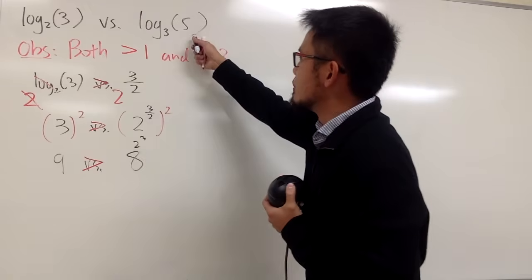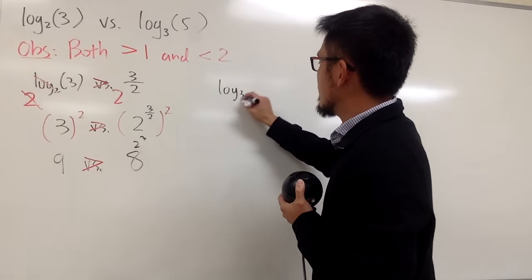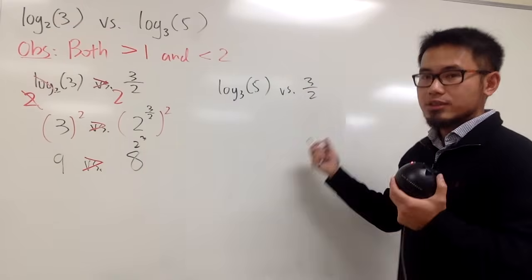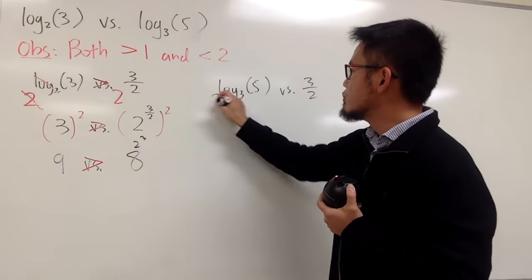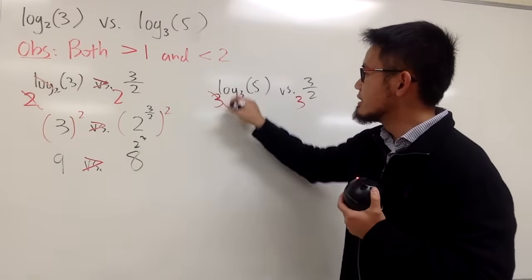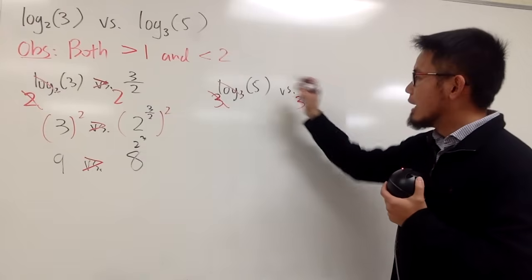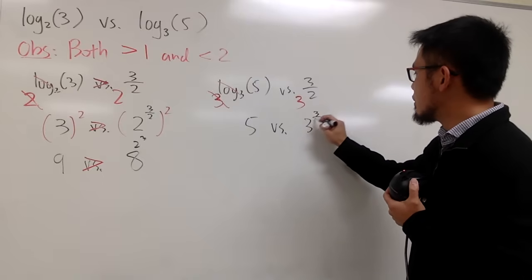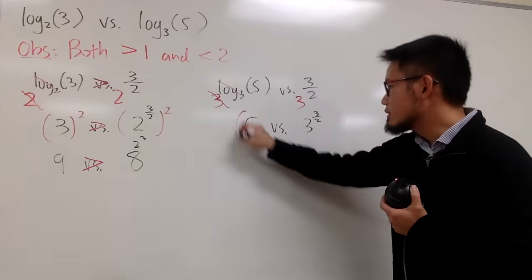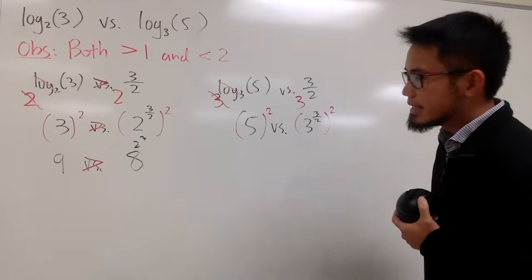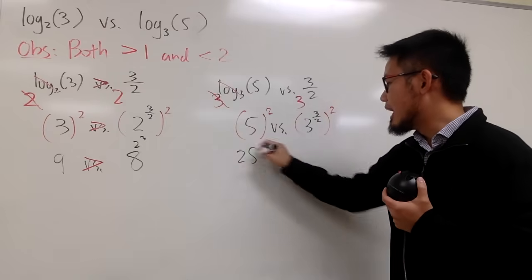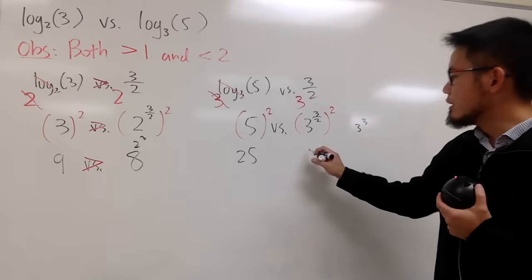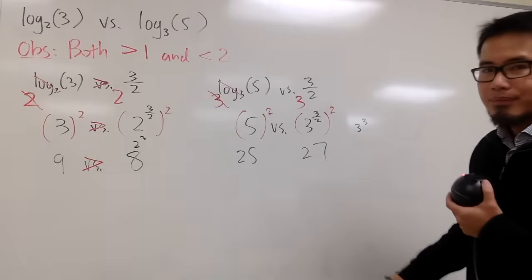And now, I will do the same thing with log base 3 of 5. And I will compare this with 3 over 2. And let's just go ahead and do the same thing. This time though, I will do 3 to this power and 3 to that power, so that this and that will cancel. And I see that we have the left-hand side is 5. I'm comparing that with 3 raised to the 3 over 2 power. And then, of course, similar to earlier, let's square both sides. On the left-hand side, this is 25. On the right-hand side, this is just 3 to the 3rd power. Which is 27.